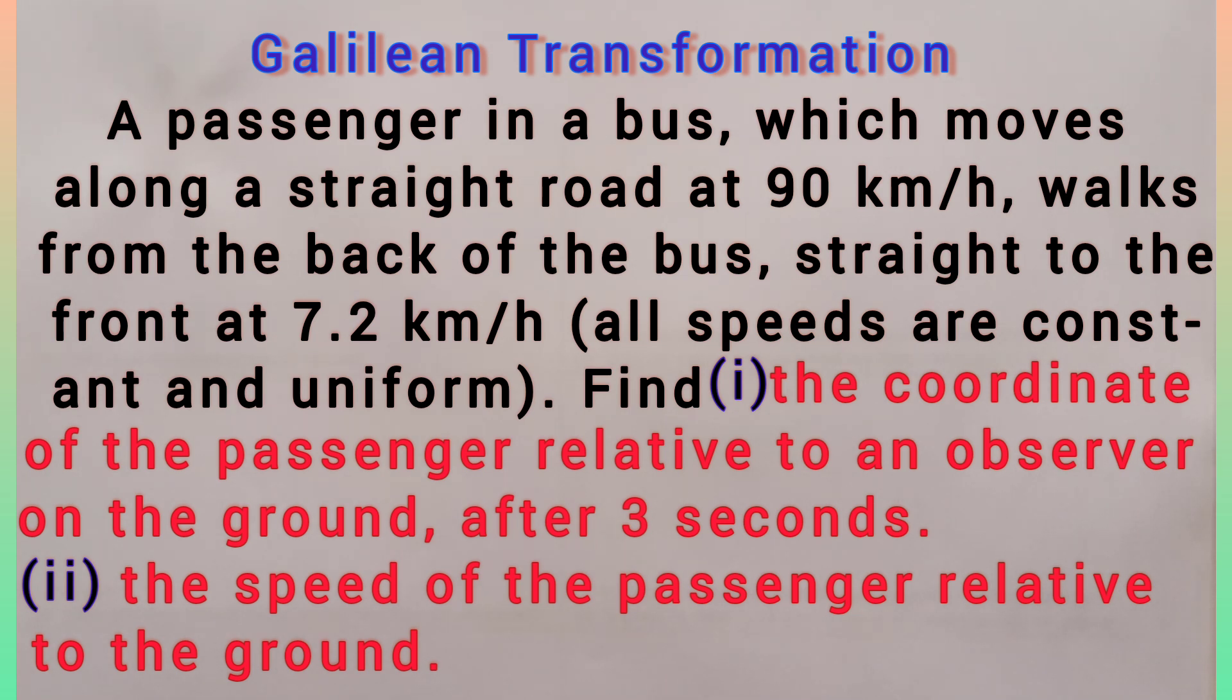Find: (1) the coordinate of the passenger relative to an observer on the ground after 3 seconds, and (2) the speed of the passenger relative to the ground.